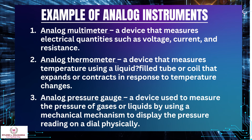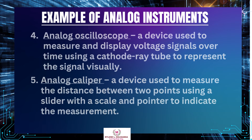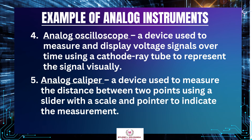3. Analog pressure gauge — a device used to measure the pressure of gases or liquids using a mechanical mechanism to display the pressure reading on a dial. 4. Analog oscilloscope — a device used to measure and display voltage signals over time using a cathode ray tube to represent the signal visually. 5. Analog caliper — a device used to measure the distance between two points using a slider with a scale and pointer to indicate the measurement.